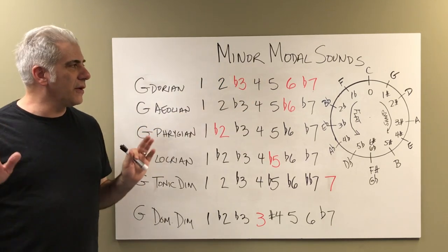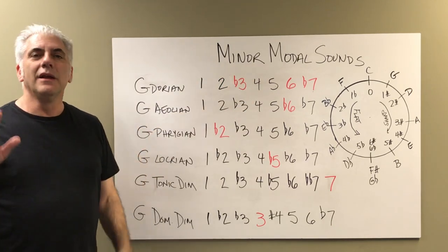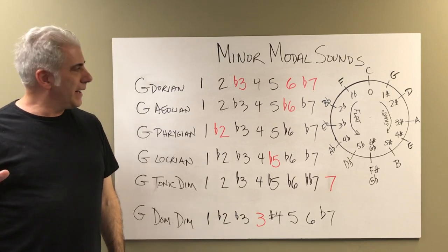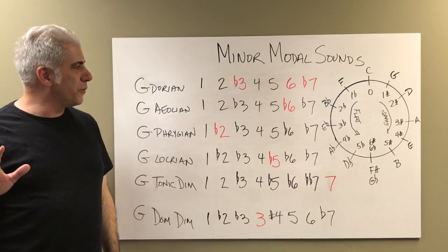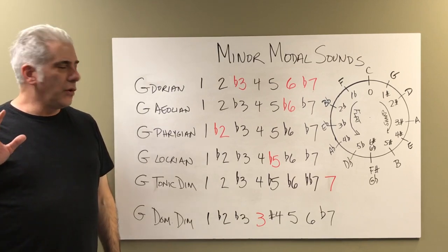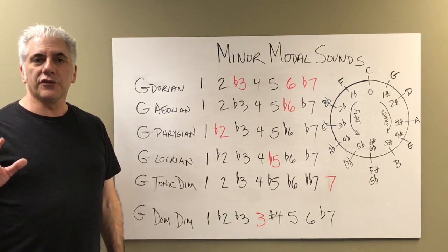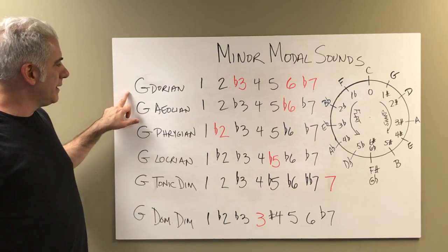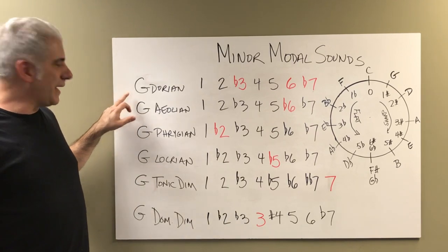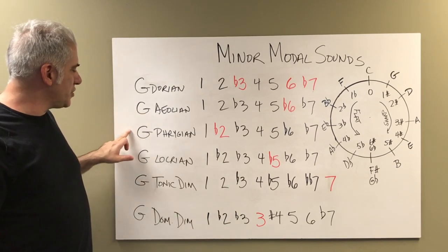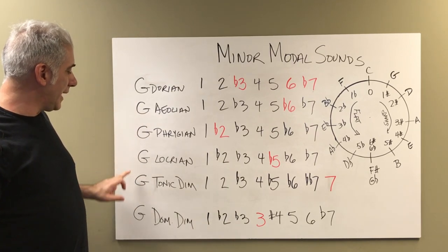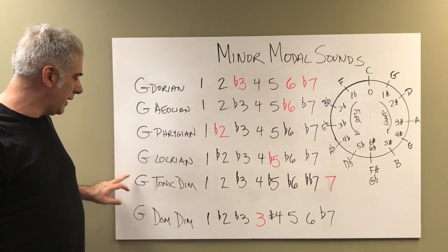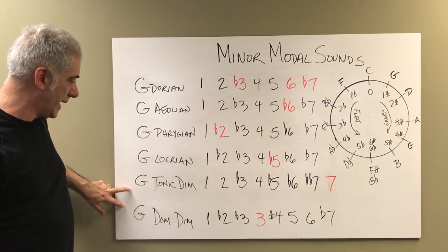What I've done here is I've taken the key of G and I started with the modal scales, starting with G Dorian, and then going to Aeolian, Phrygian, Locrian, and then I did tonic diminished and diminished. I'll explain why I did those two at the bottom here.